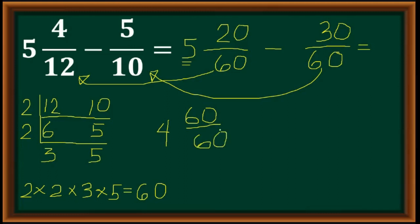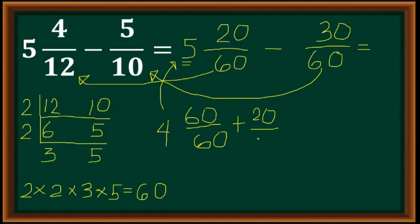Why? I copy the denominator, 60, and put 60 on the numerator because 60 divided by 60 equals 1. If you add that 1 back to our whole number 4, that is equivalent to 5. Then we add 20 over 60 to get 80 over 60 for the minuend part.